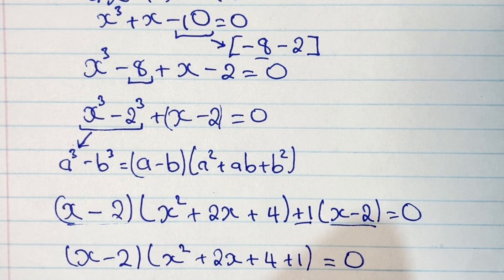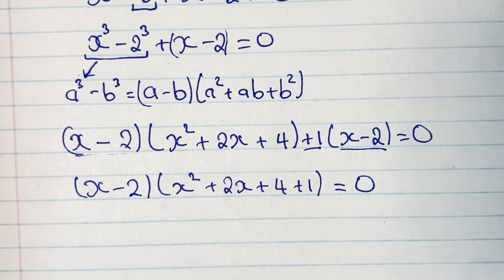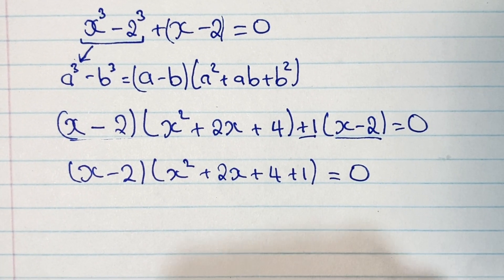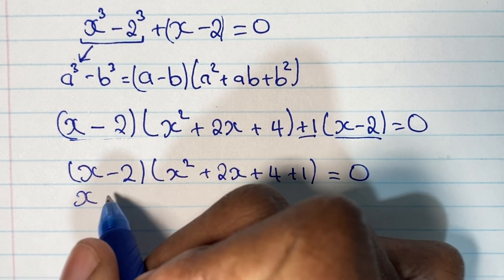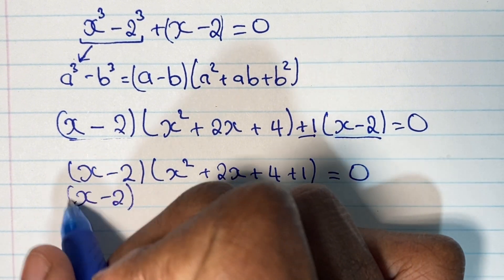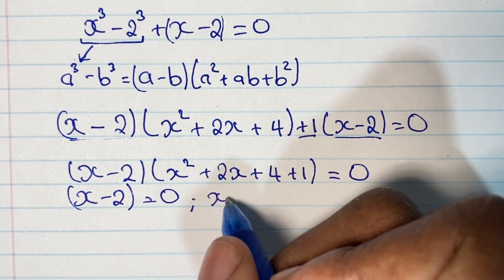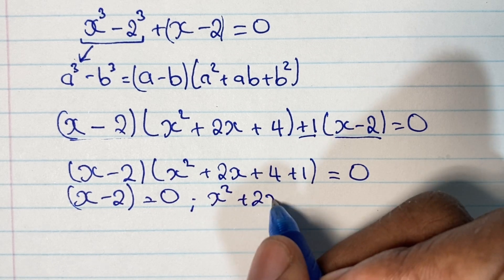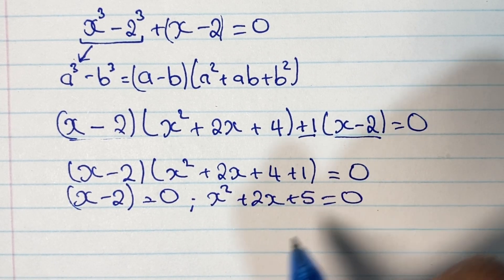We apply the zero product property: if two factors multiply together to give 0, either one of them is equal to 0 or both are equal to 0. So we have x minus 2 is equal to 0, or x squared plus 2x plus 5 is equal to 0.